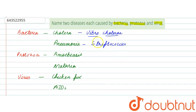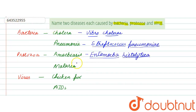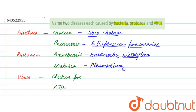In pneumonia, the person's airways are blocked and they feel difficulty while breathing. The protozoan disease amoebiasis is caused by Entamoeba histolytica. Malaria is caused by Plasmodium — Plasmodium is basically the genus.